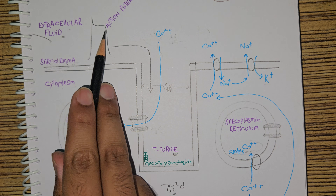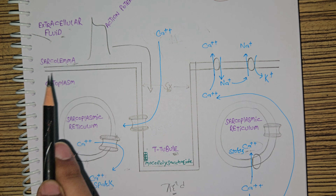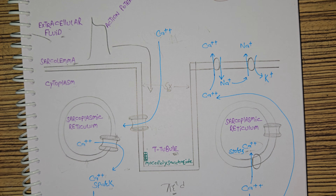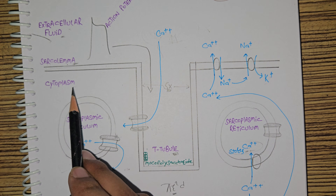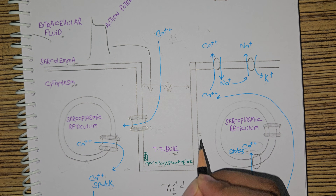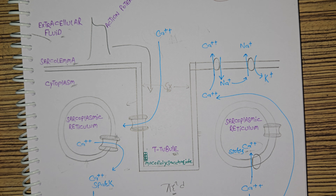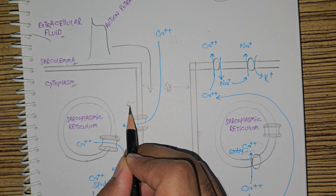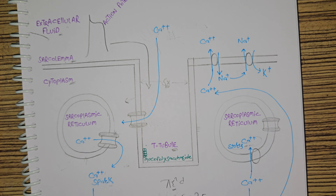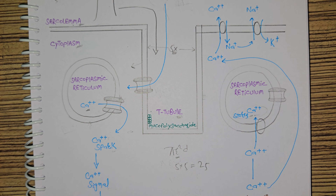Whenever the action potential reaches the sarcolemma — the plasma membrane of the cardiac muscle cell — it goes into the cytoplasm through these T-tubules. When this action potential goes inside, it causes the release of calcium.